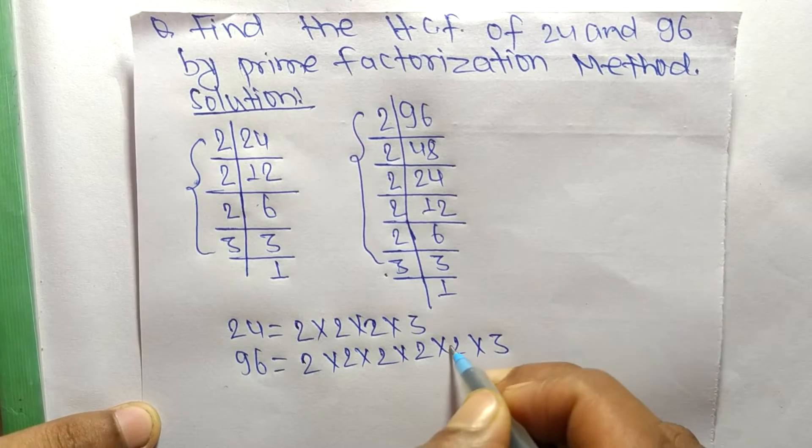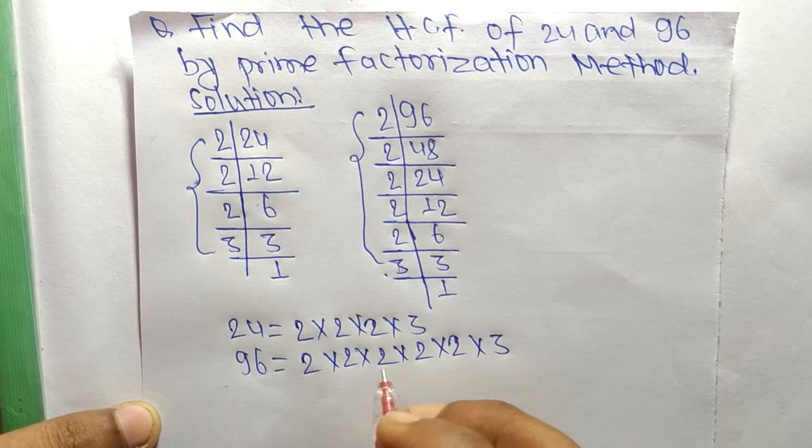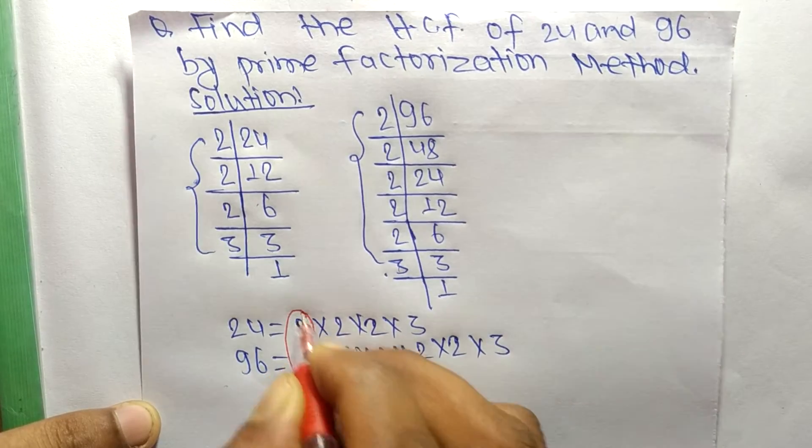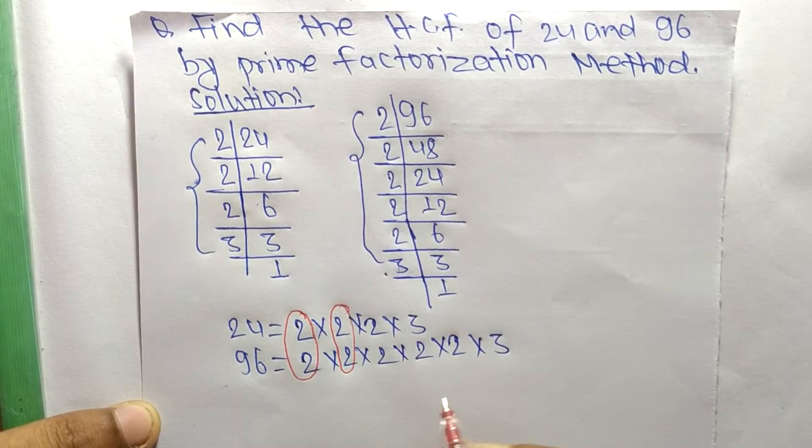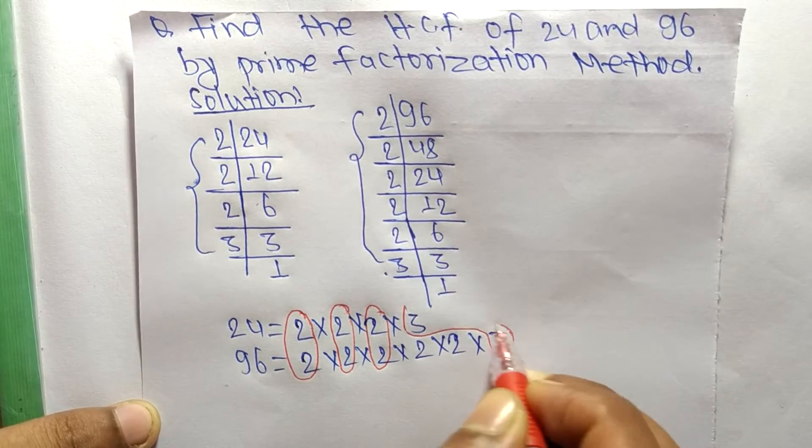Now we find the common factors in these prime factorizations. The first common factor is 2, the second is 2, the third is 2, and the last one is 3.